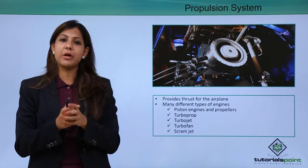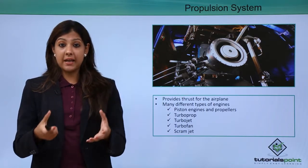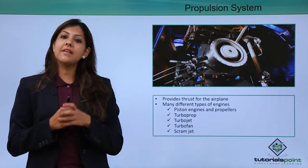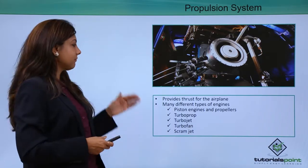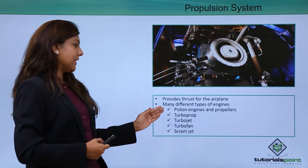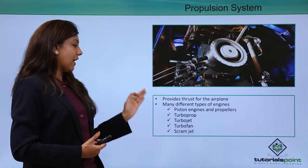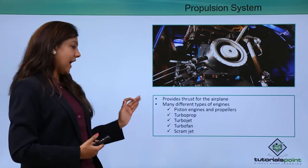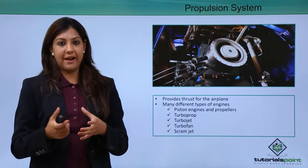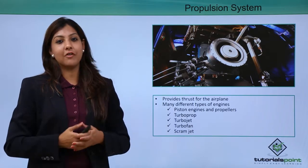Talking about the propulsion system — this system helps to give the drive or force for an aircraft to start. Just like in a car the engine provides the force for the car to move forward, in the aircraft you have the propeller system. It provides thrust for the airplane — thrust is always forward-moving. Many different types of engines exist: piston engines and propellers, turboprops, turbojets, turbofans, and scramjets. Different airlines have different kinds of propulsion depending on the need of that particular aircraft.